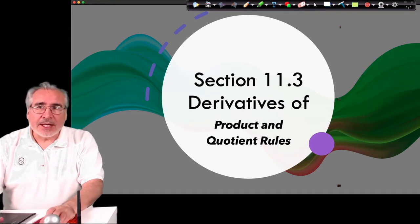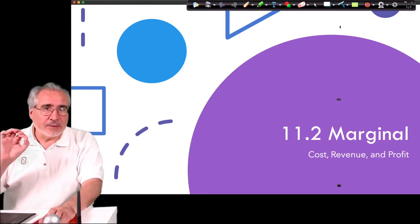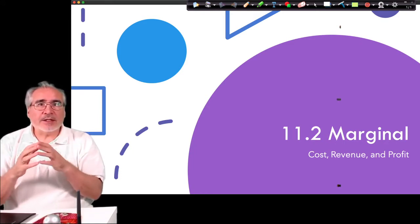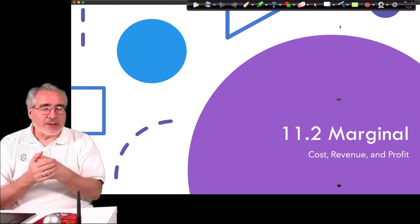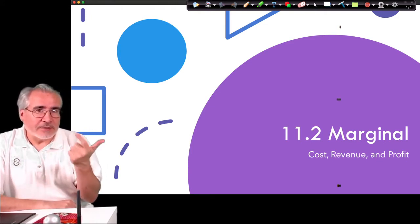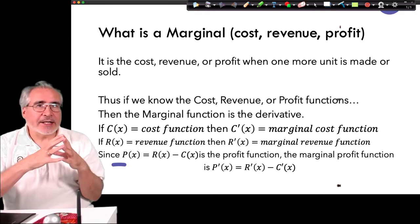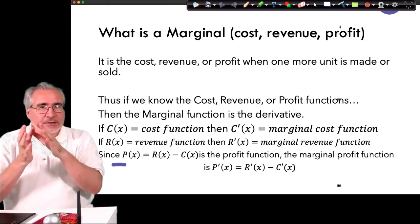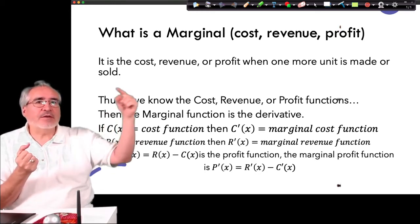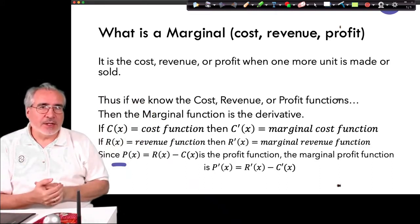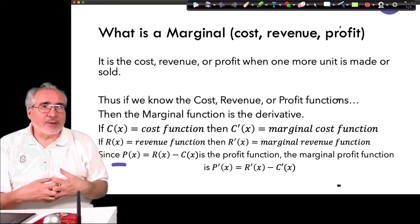Before we do that, I'd like to highlight a few things to think about when doing 11.2. Section 11.2 primarily involves taking derivatives of sums or differences and dealing with cost, revenue, and profit. One tricky part is keeping track of whether we're dealing with the cost function — the actual cost — or the marginal cost function, which is the cost of one more item being produced. You have to read the questions carefully, as they sometimes go back and forth on what they're asking.